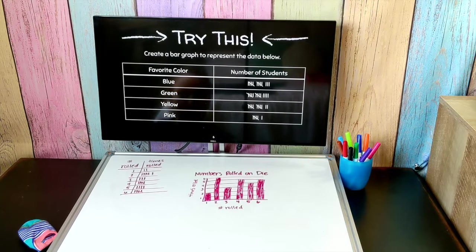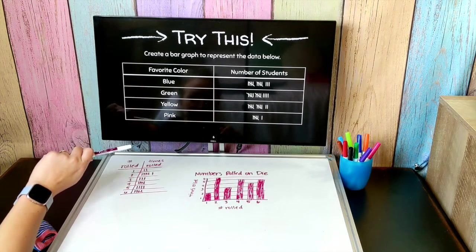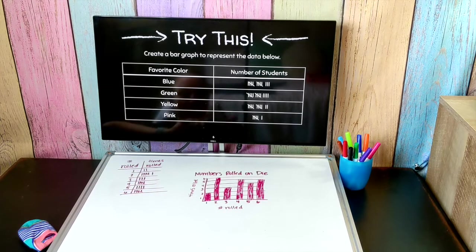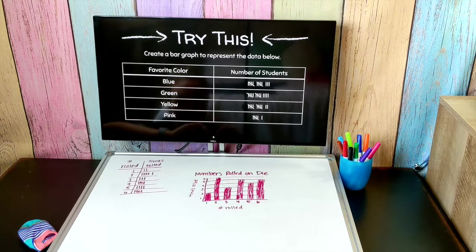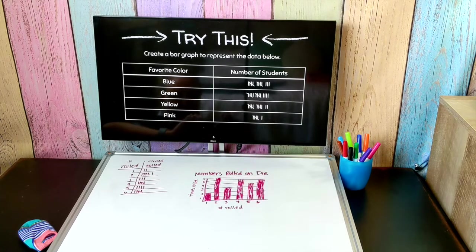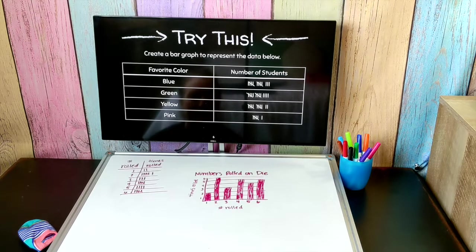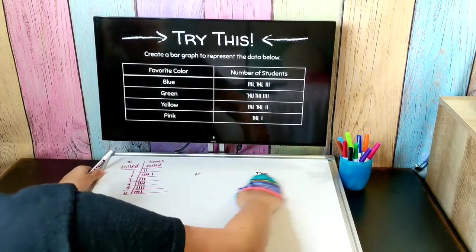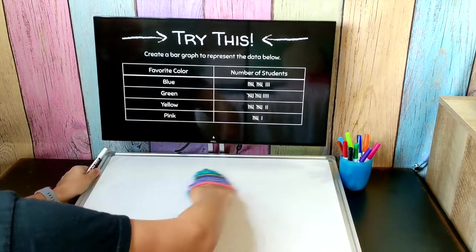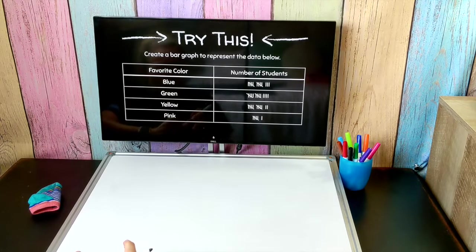Try this on your own. Pause the video and create a bar graph that shows this information. Remember to include your title, your labels. Make sure you pick a scale to use and show all of this data exactly as it's shown here. Let's take a look at how this would be shown in a bar graph. Now you may have made some different choices than me in creating a bar graph and that's okay as long as it makes sense.